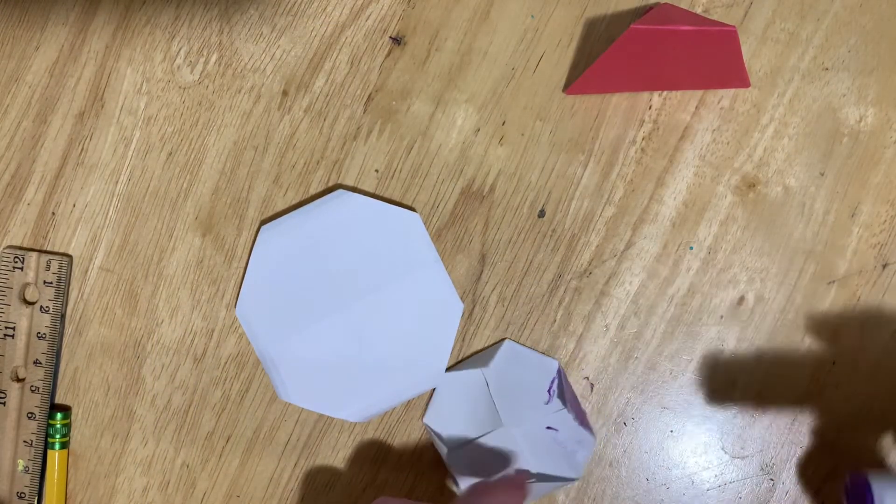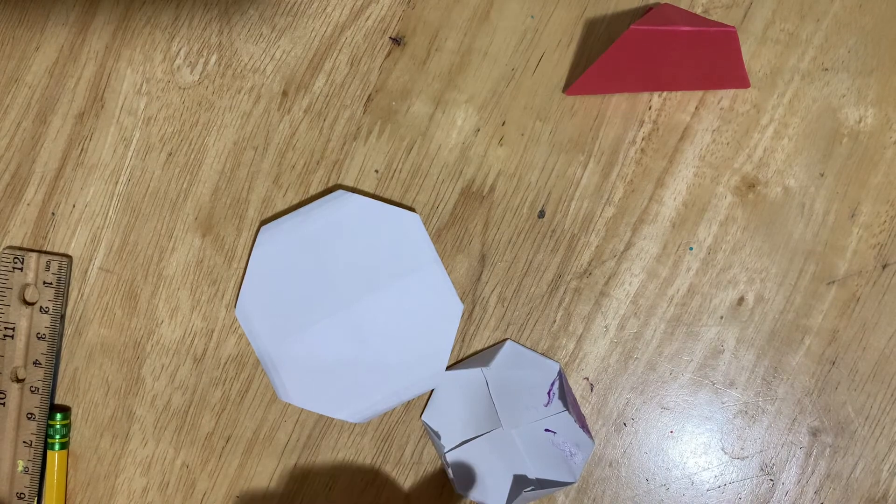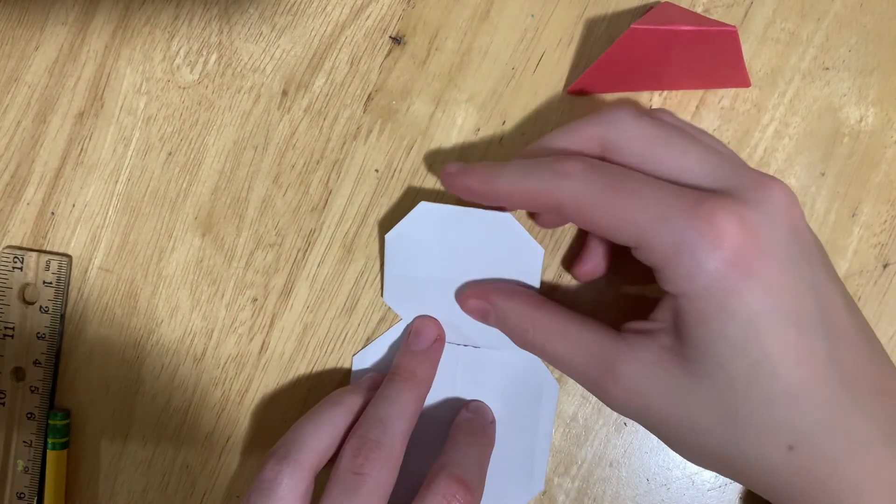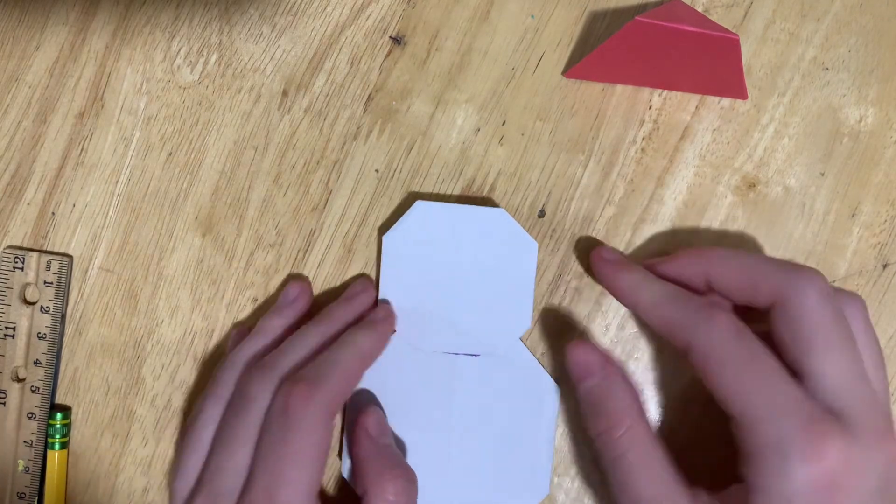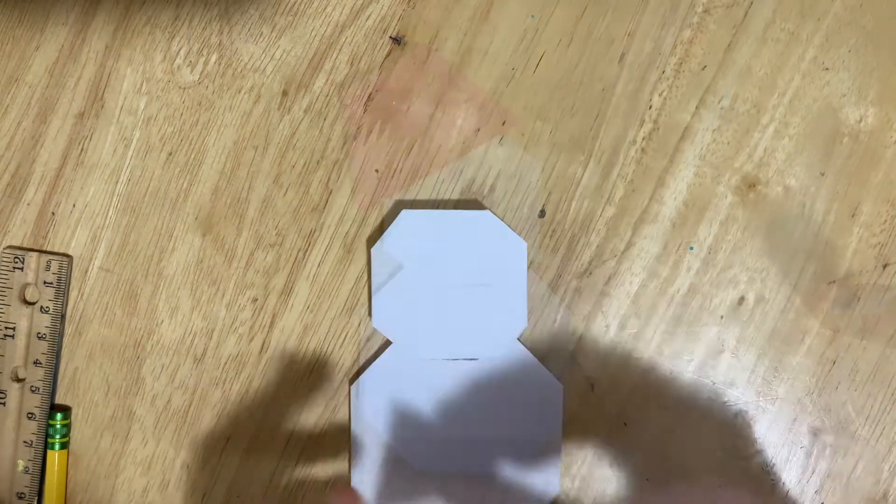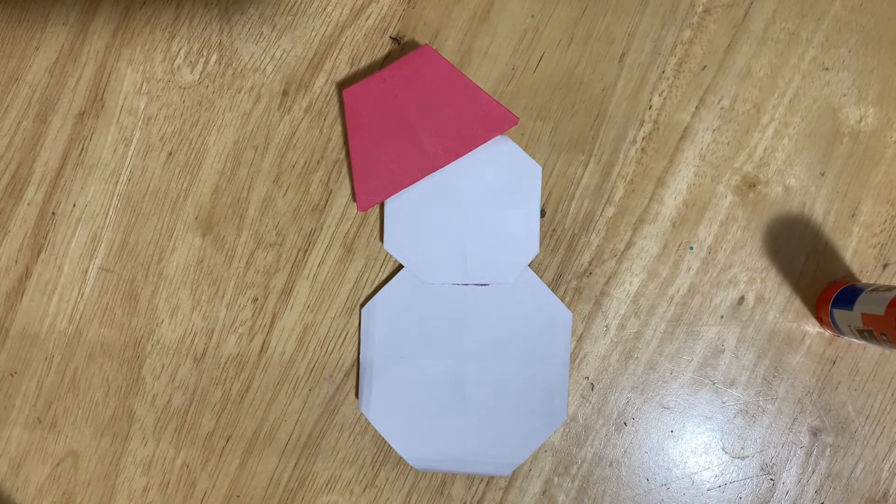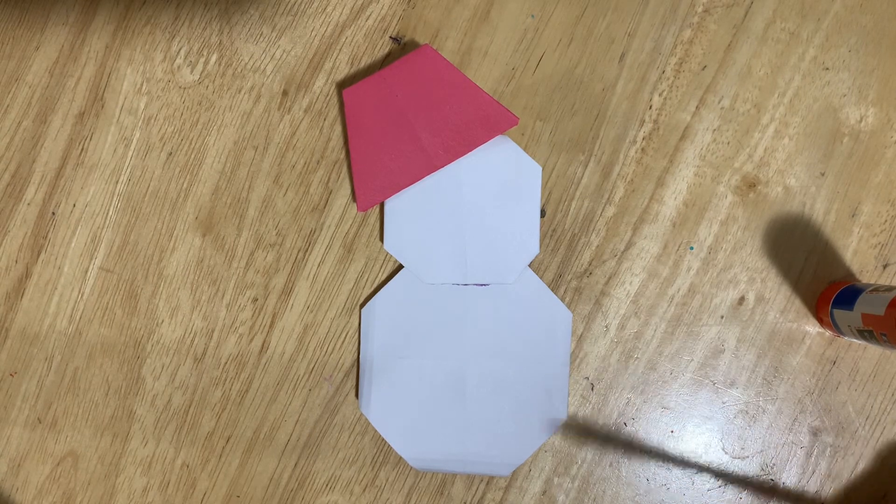Now just glue the parts together. Finally, you can use your pencil to add eyes, a mouth, and even buttons.